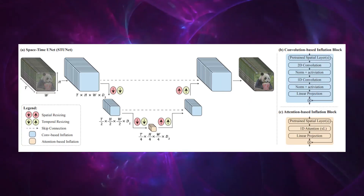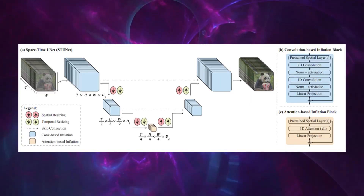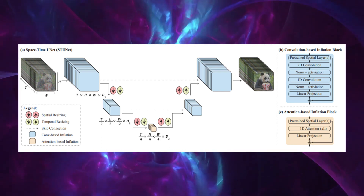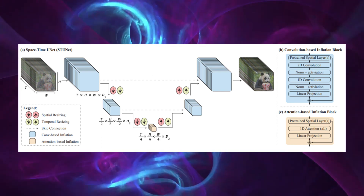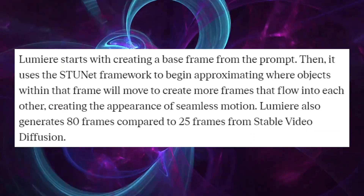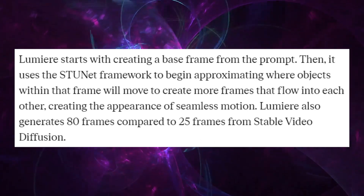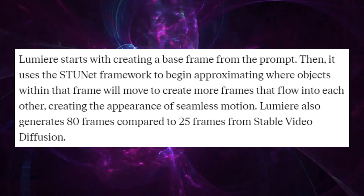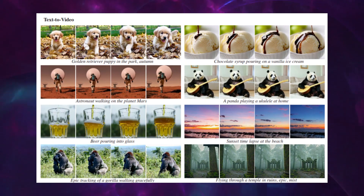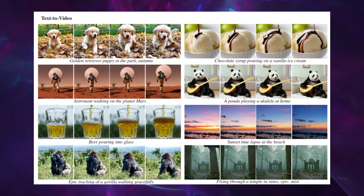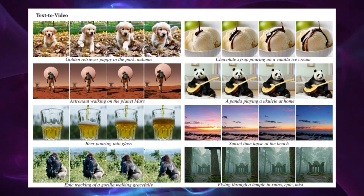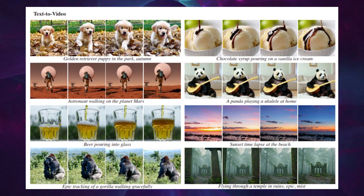The space-time U-Net architecture adds another layer of complexity. U-Net is a type of convolutional neural network that's particularly good at analyzing visual data. The space-time aspect refers to its ability to not only understand spatial relationships within images, but also how these relationships change over time, which is crucial for video generation. This allows Lumiere to not just create individual frames, but to weave these frames into a sequence that has a logical flow and continuity, much like how scenes progress in a movie.